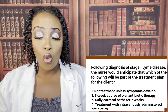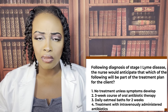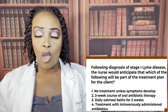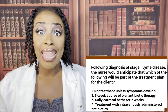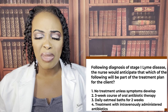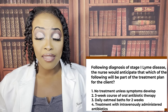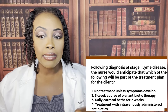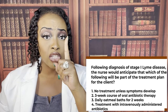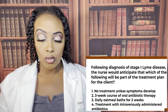Looking at the wrong choices: one, no treatment unless symptoms develop — absolutely not. When it comes to Lyme disease, it's all about preventative measures and early treatment. Three, daily oatmeal bath — that's not going to do anything. And four, IV-administered antibiotics — that is often done, but that's done in the later stages. The question says the patient is in stage one, so number two is correct.